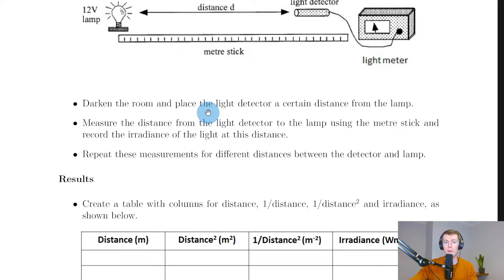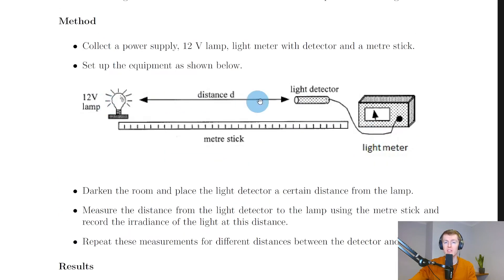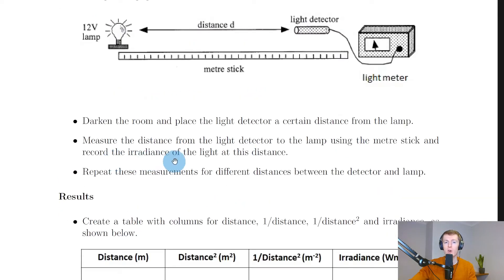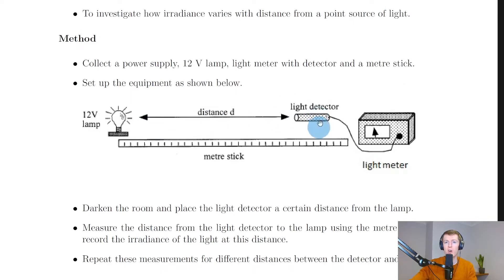Darken the room and place the light detector at a certain distance from the lamp. Measure the distance from the light detector to the lamp using the meter stick and record the irradiance of the light at that distance. Repeat these measurements for different distances — you could start close and move the detector back at regular intervals, or start further away and move it closer, collecting at least six readings.